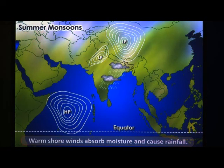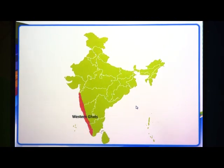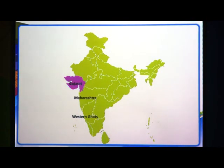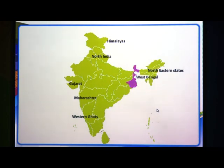This is summer monsoon. In India, summer monsoon is experienced in the regions like Western Ghats, Maharashtra, Gujarat, North India, the Himalayas, northeastern states and West Bengal.